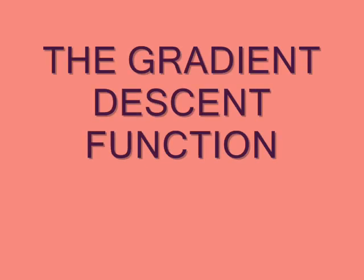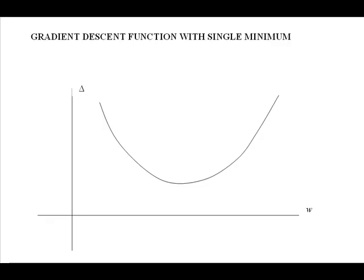To establish the correct weights, a gradient descent function is needed, such as this, which plots the difference between input and required output against the weight values.